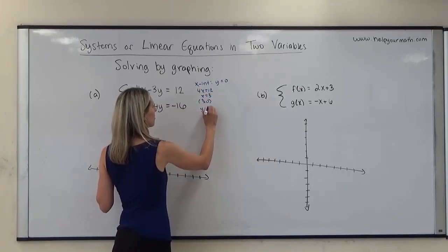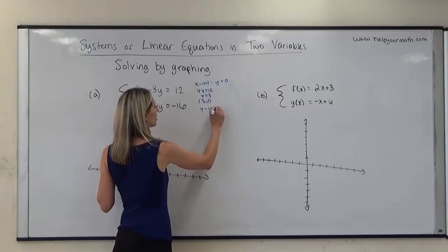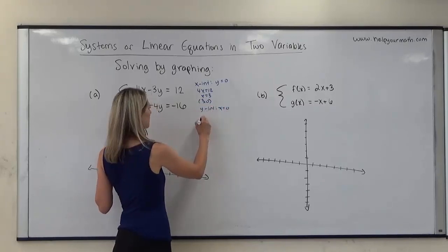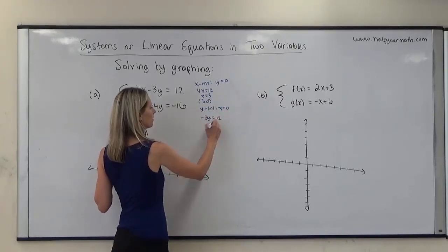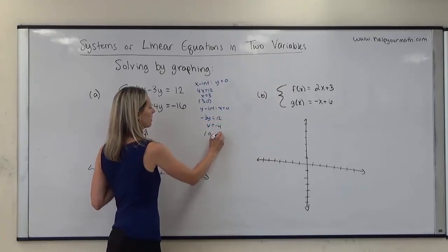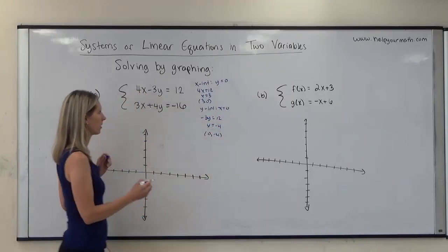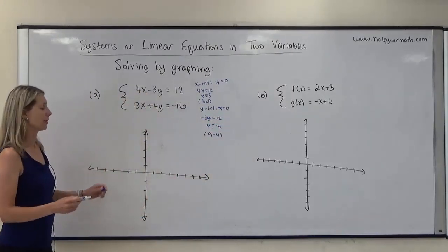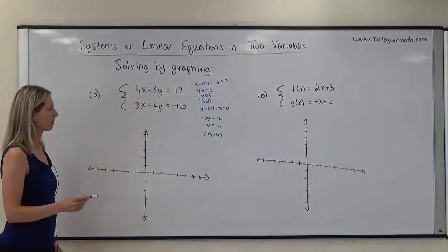And then to find the y-intercept, I'll plug in 0 for x, so that would be negative 3y equals 12, and y equals negative 4. The ordered pair is (0, negative 4).